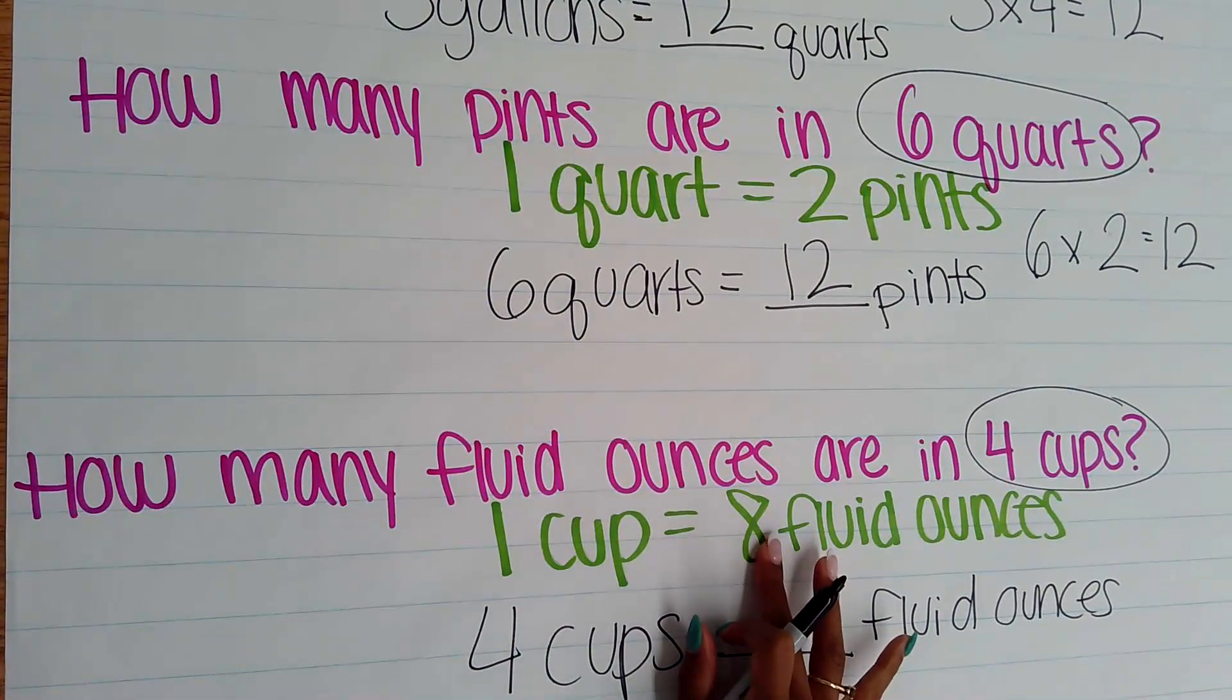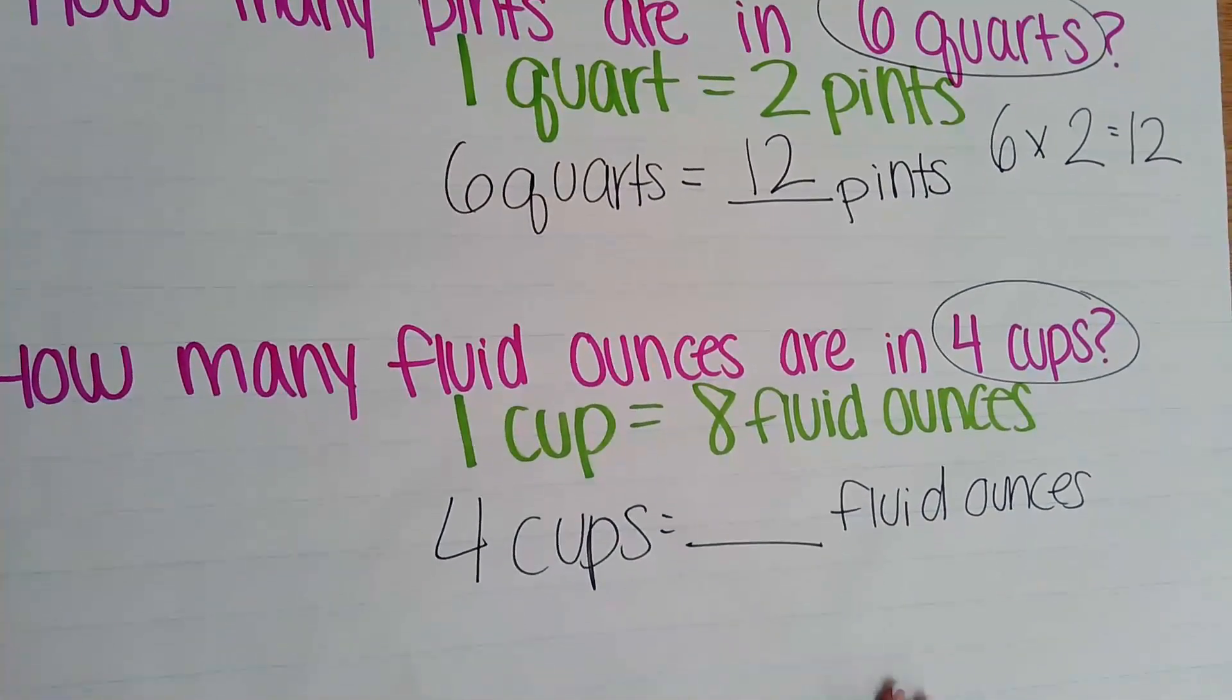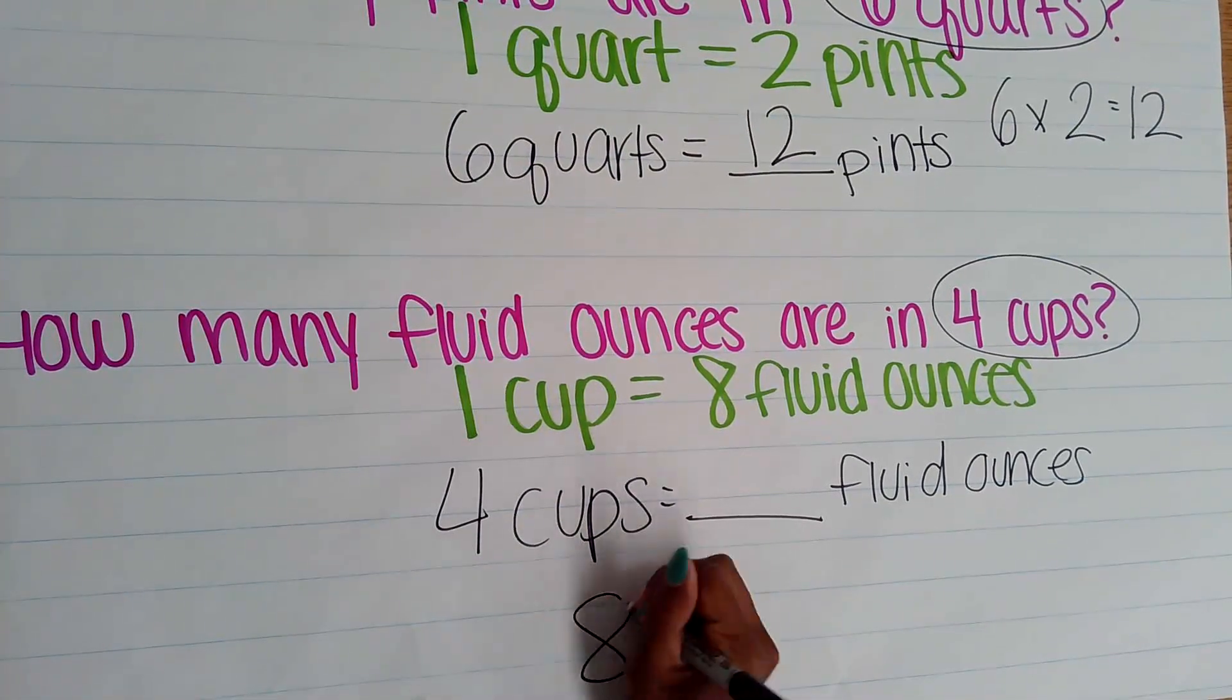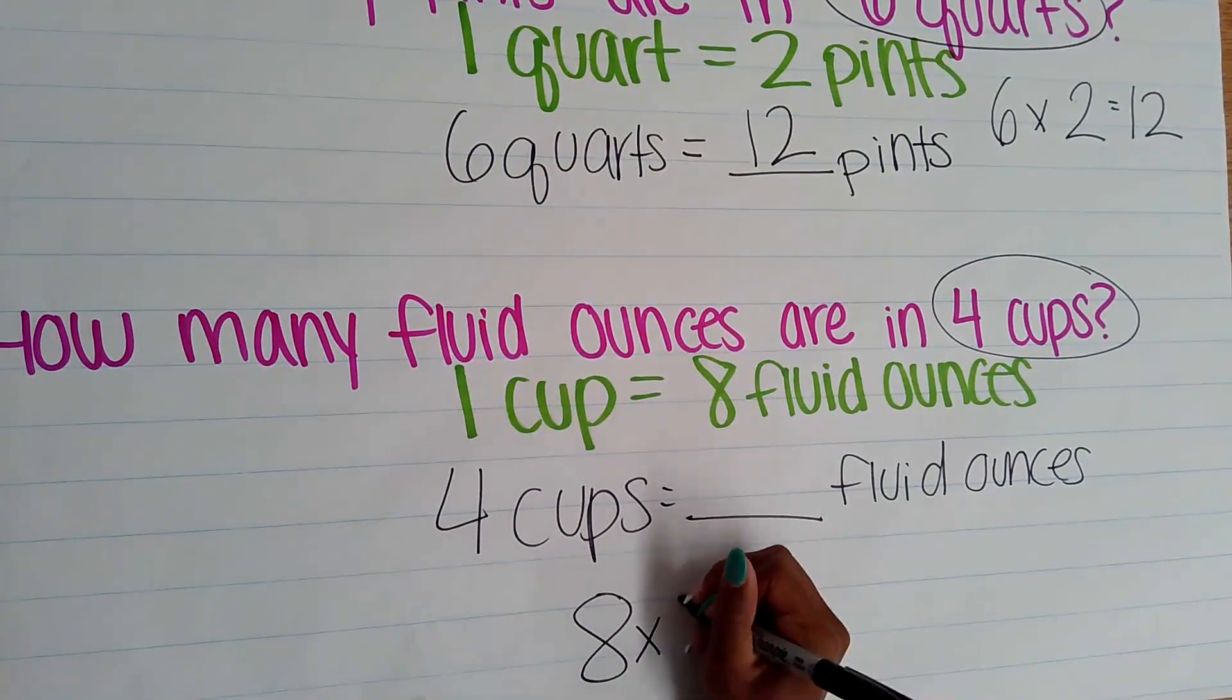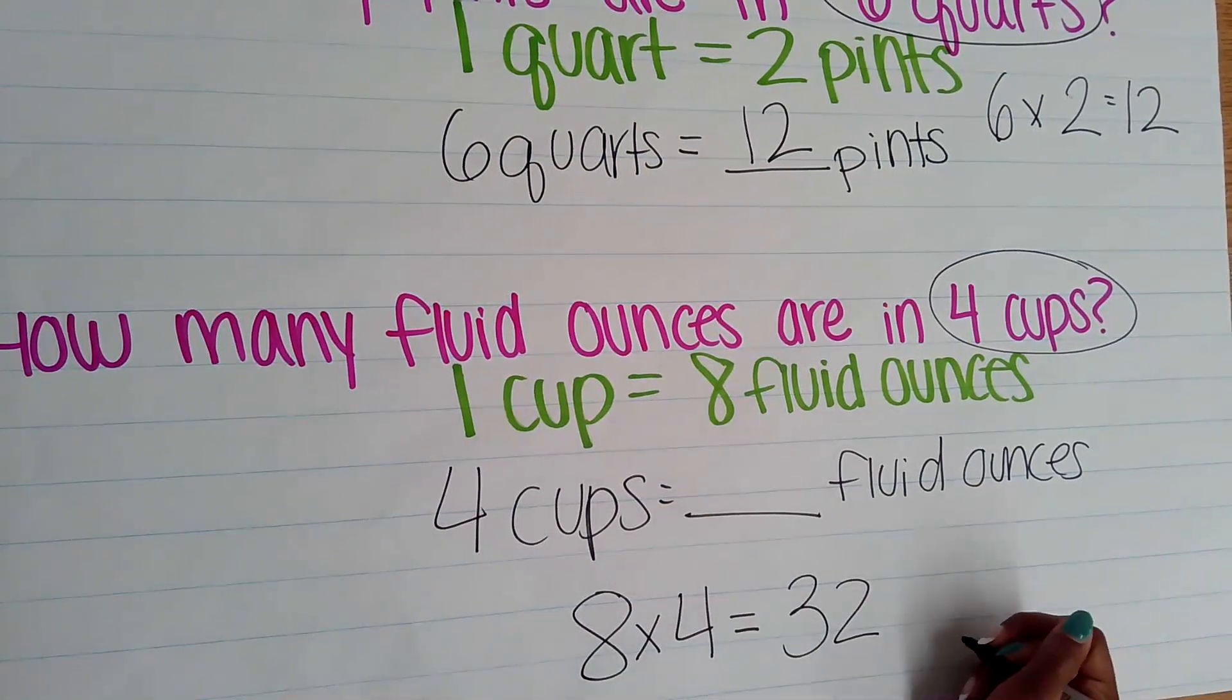Because one group has 8 fluid ounces, I now have four groups, so I'm going to take my 8 fluid ounces and multiply it by 4. I know 8 times 4 gives me 32, so four cups is equivalent to 32 fluid ounces.